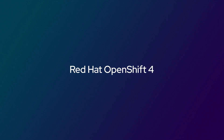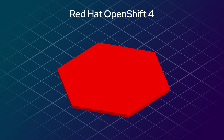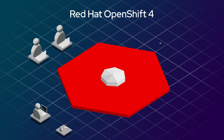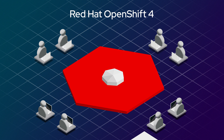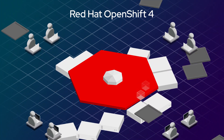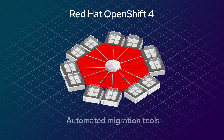Red Hat OpenShift 4 is the enterprise-ready Kubernetes platform with automated day-two operations that empowers developers to innovate. To help organizations make the move from OpenShift 3 to take advantage of the features in OpenShift 4, Red Hat has released automated migration tools that make migration easier.